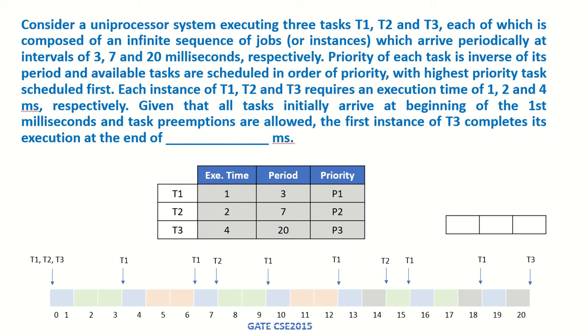Consider a uniprocessor system executing three tasks T1, T2, and T3, each of which is composed of an infinite sequence of jobs which arrive periodically at intervals of 3, 7, and 20 milliseconds respectively. So we have three tasks and these are arriving periodically in the system infinite times.